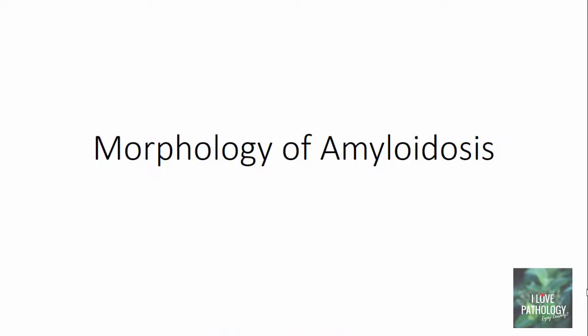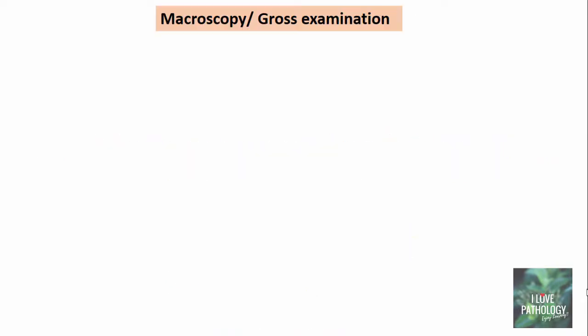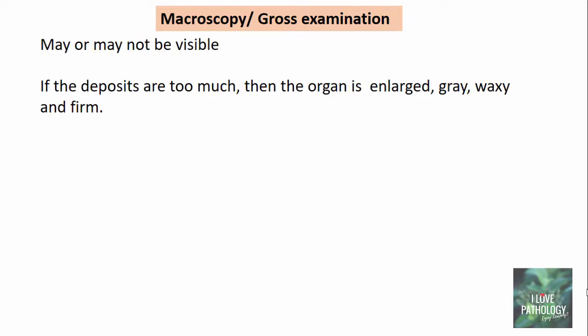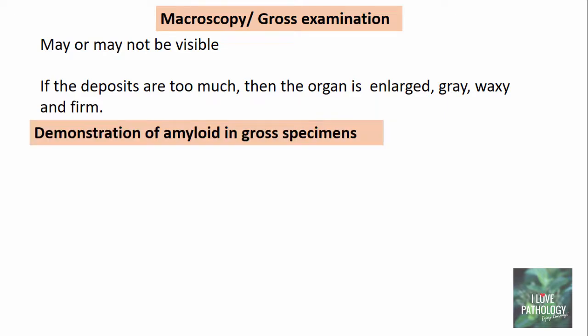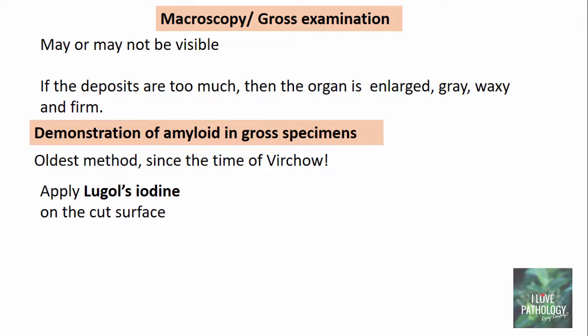Moving on to understanding the morphology of amyloidosis. On macroscopy or gross examination, the amyloid deposits may or may not be visible. If the deposits are extensive, the organ is enlarged, appears gray or waxy, and is firm in consistency. You can demonstrate amyloid in gross specimens — this is the oldest method, dating back to the time of Virchow.